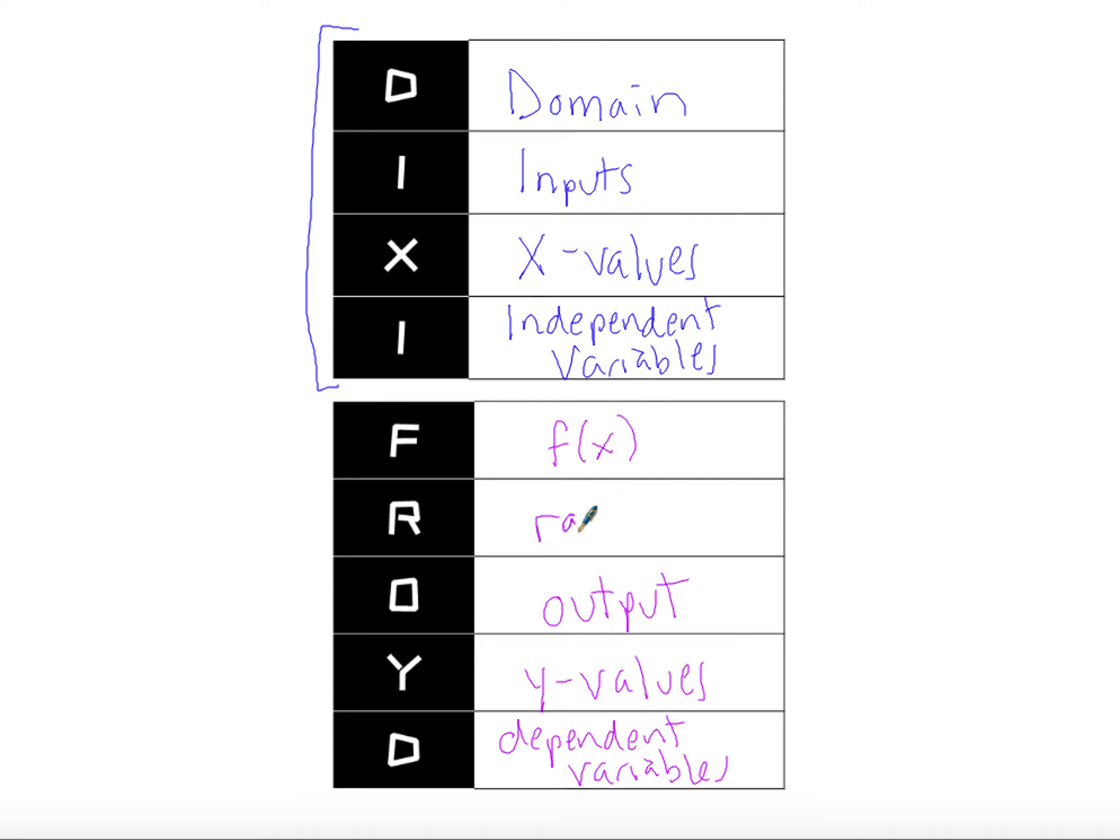And the range is the set of all of those. It's the set of all of our F of X, all of our outputs, all of our Ys, and all of our dependent variables. If you can remember the word Freud, you can remember that F of X, range, output, Y, and dependent go together.